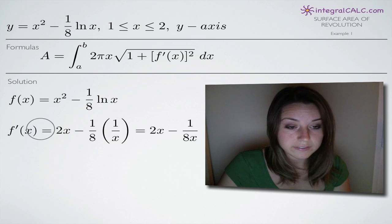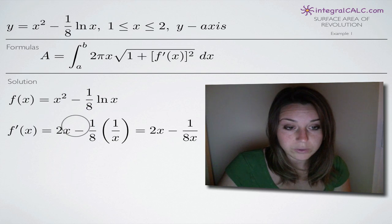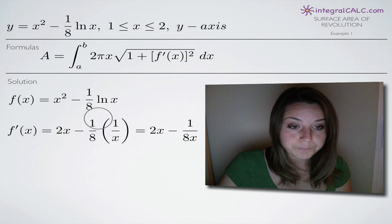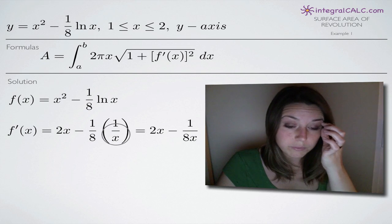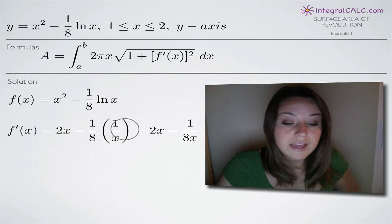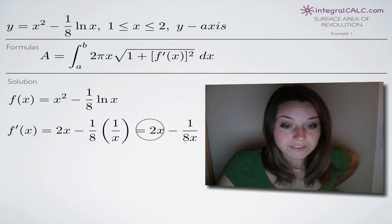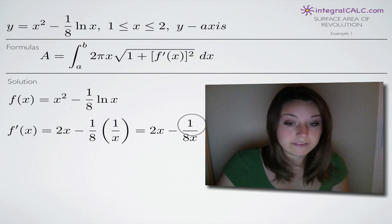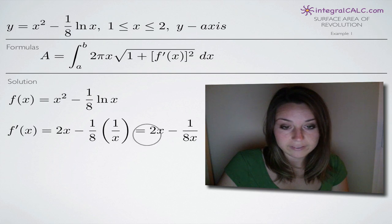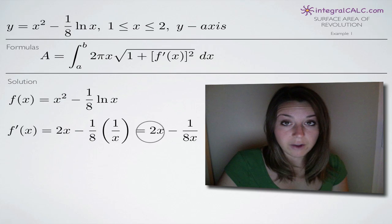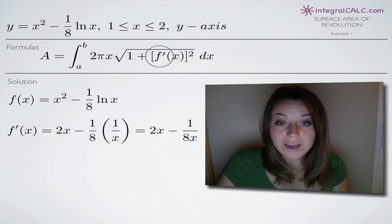For f prime of x: for x squared, we multiply the 2 out front and get 2x. Then the one-eighth coefficient stays, and the derivative of the natural log of x is 1 over x, so we multiply one-eighth by 1 over x. When we simplify, our derivative ends up being 2x minus 1 over 8x.